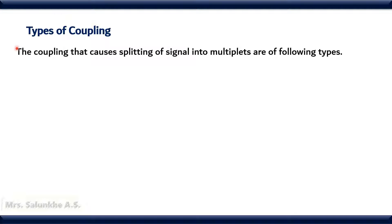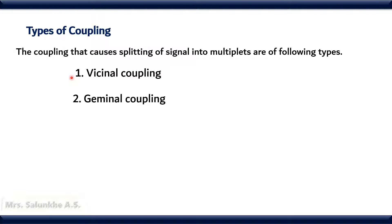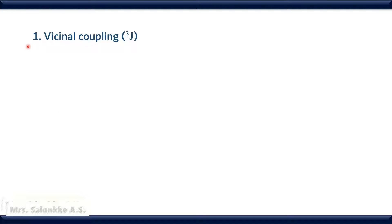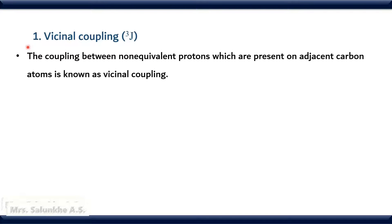The coupling that causes splitting of signal into multiplets is of the following types. In case of PMR spectra, the coupling between two protons is of three types: vicinal coupling, geminal coupling, and long-range coupling. First we see vicinal coupling. The coupling between non-equivalent protons which are present on adjacent carbon atoms is known as vicinal coupling.